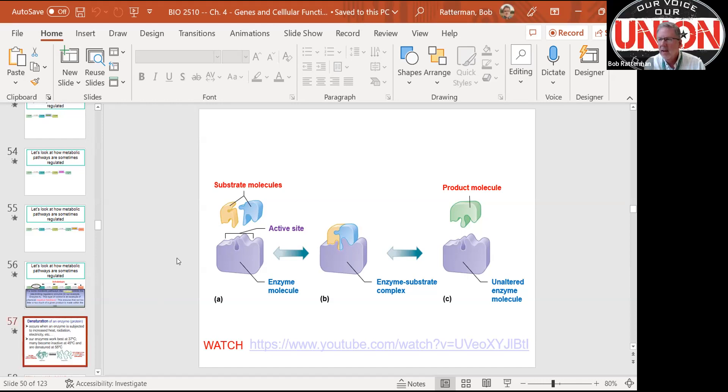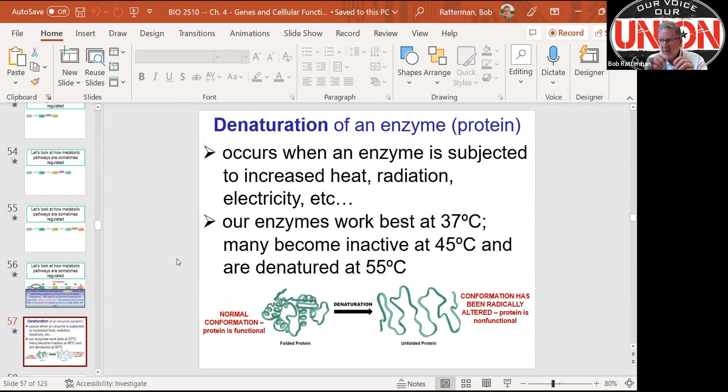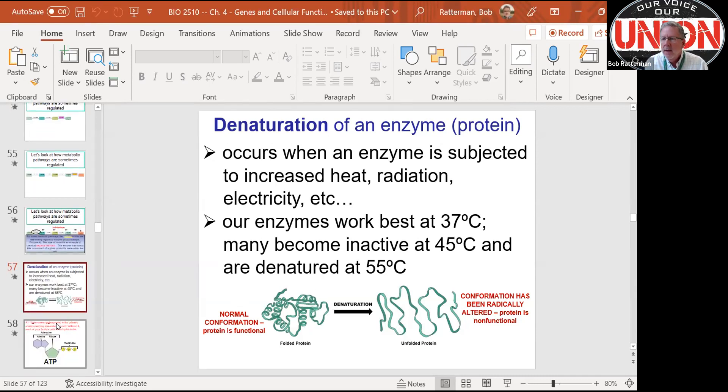If I unravel this, it's not going to hold paper together. If I change the shape, if I denature the enzyme, I alter its function. Structure function relationships, whether that's at the molecular level or at the organ level. Just always be thinking structure function relationships. The structure impacts the function. So the three-dimensional shape of the enzyme is extremely important.